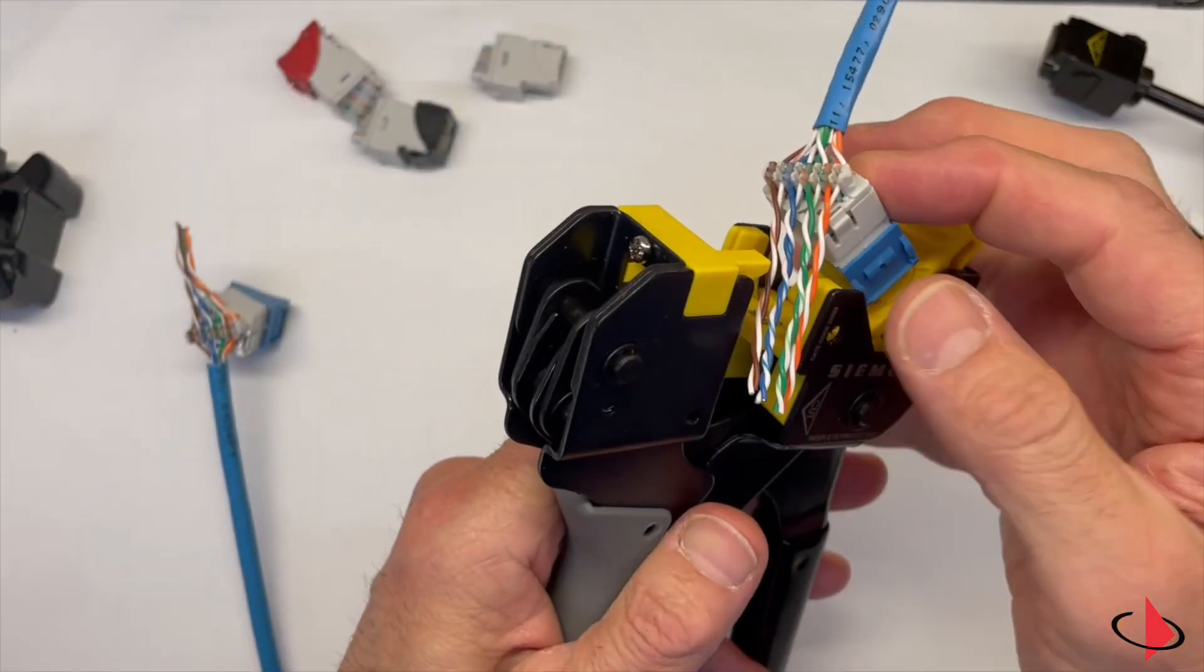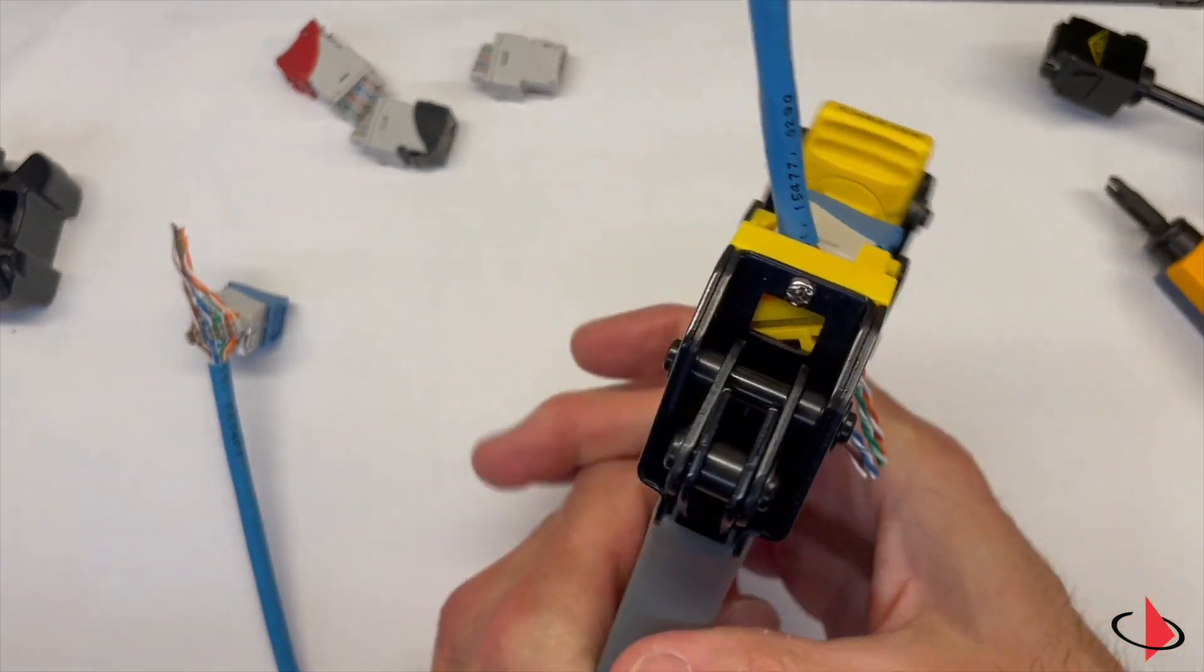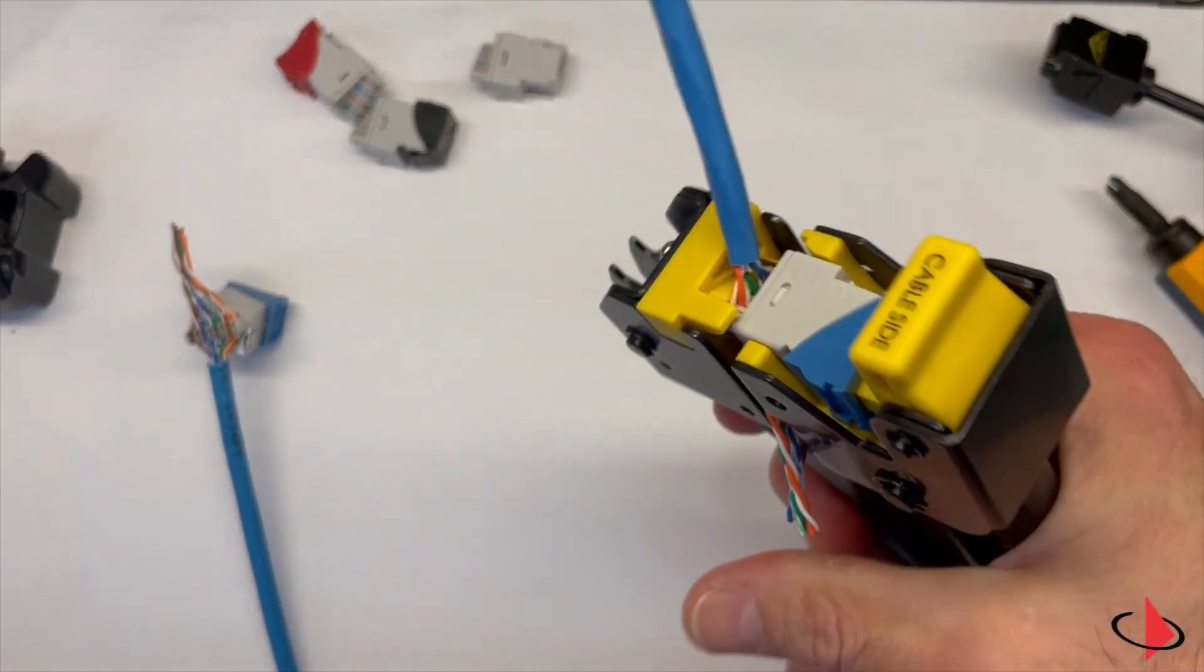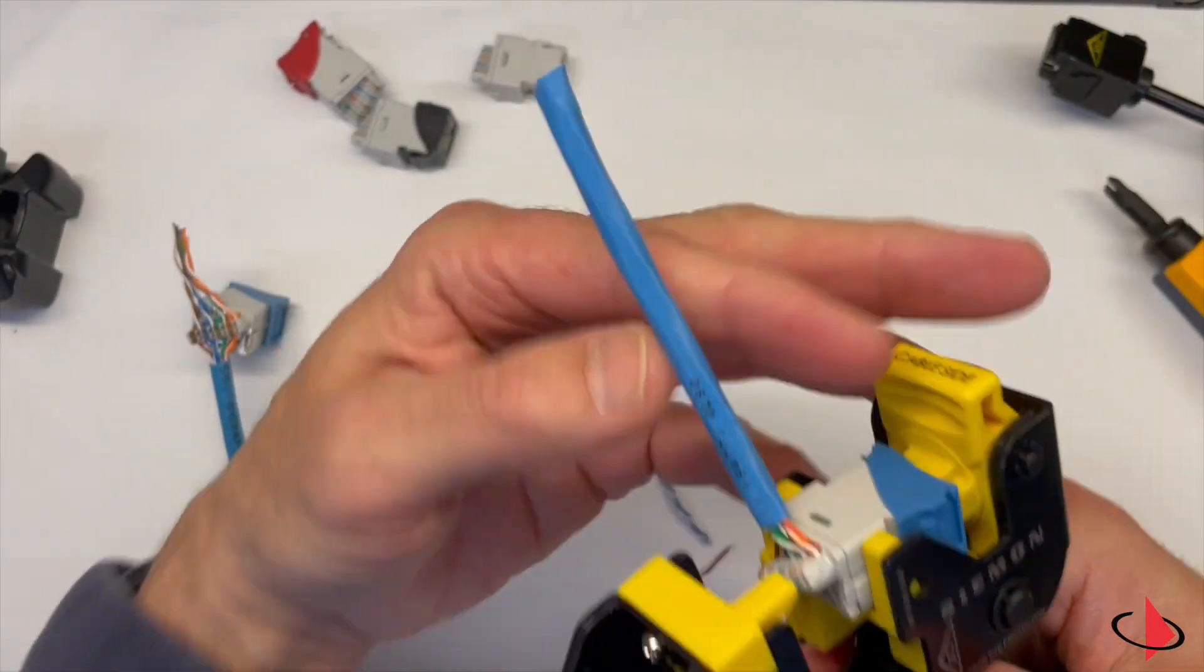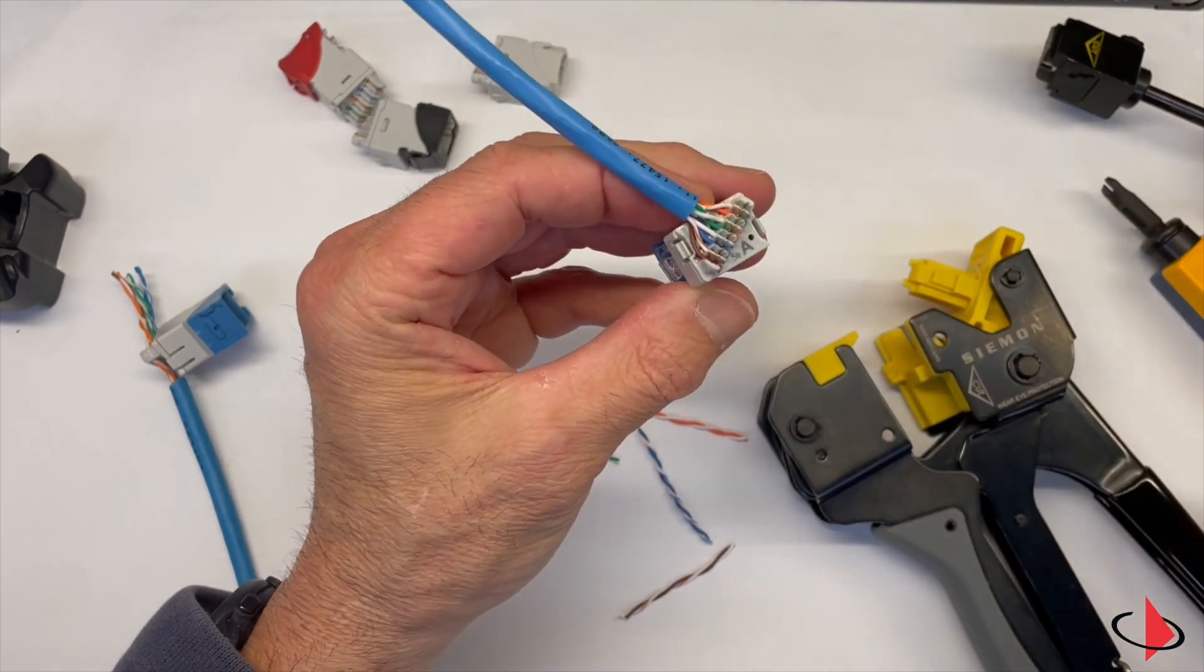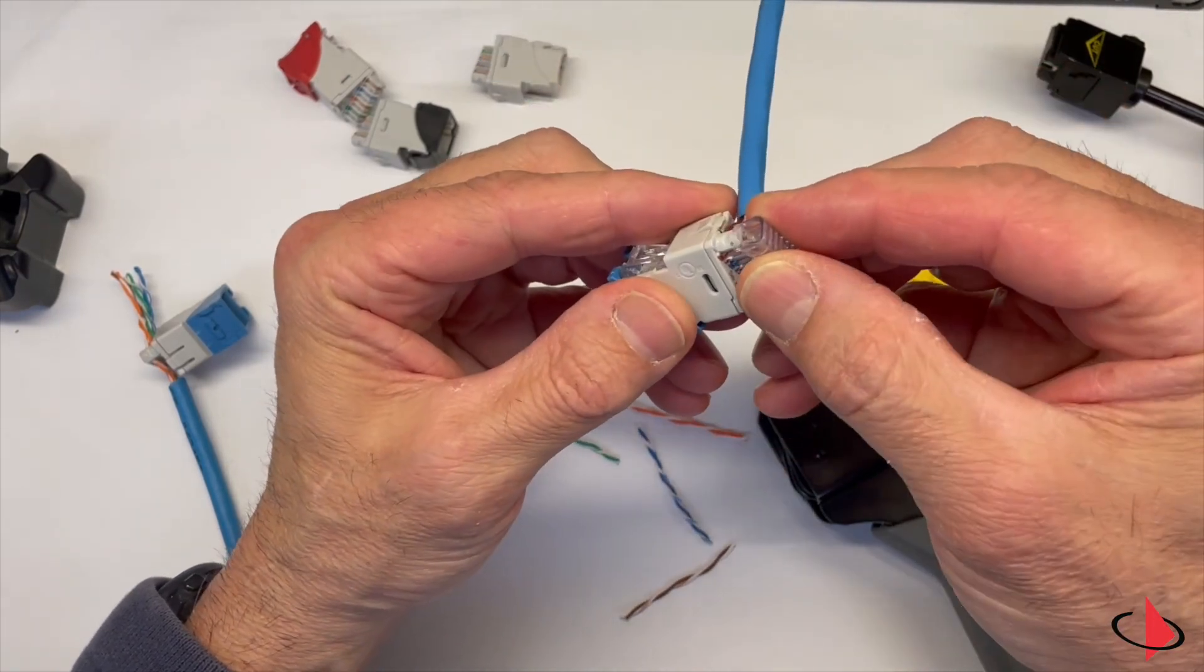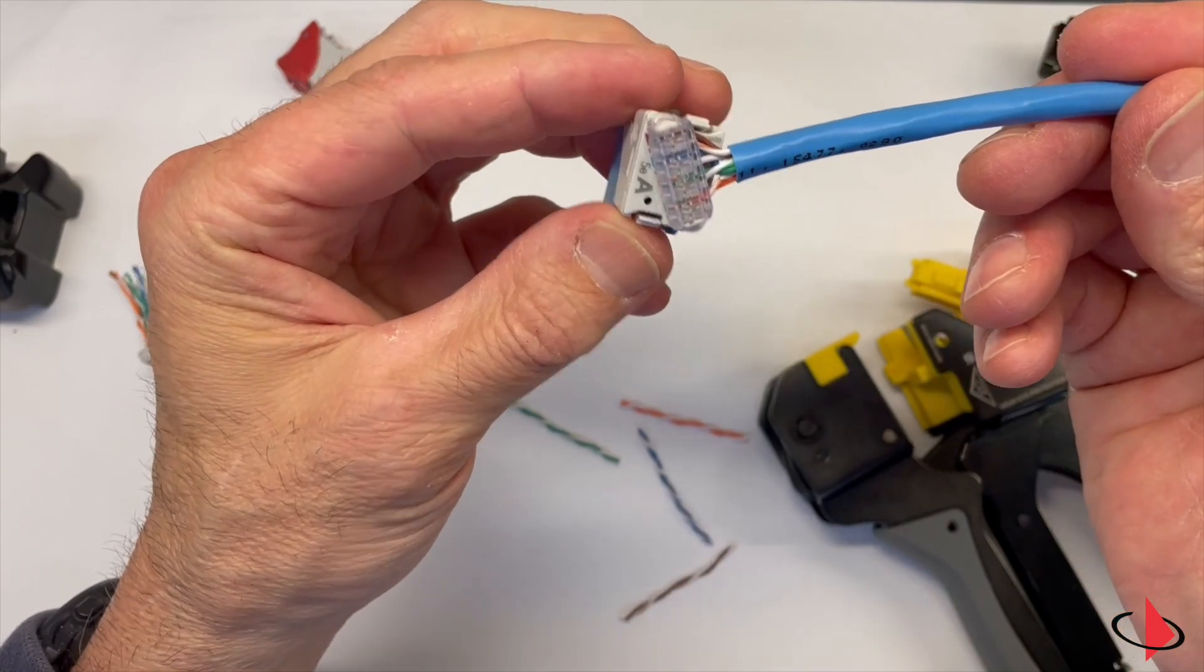So with fingers clear from the top of the tool, squeeze the handle until the conductors drop off to complete your termination. Then lift the lever to remove the outlet, and lastly install the termination cap. And that is your termination of the Ultramax jack with the Ultramax Turbo tool.